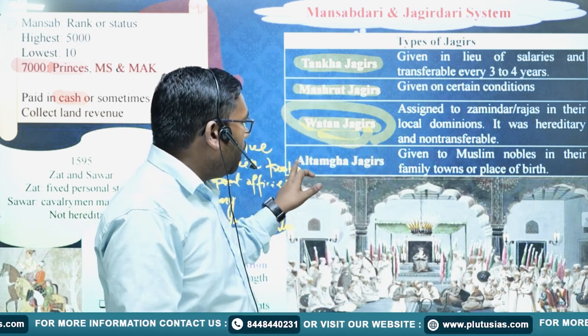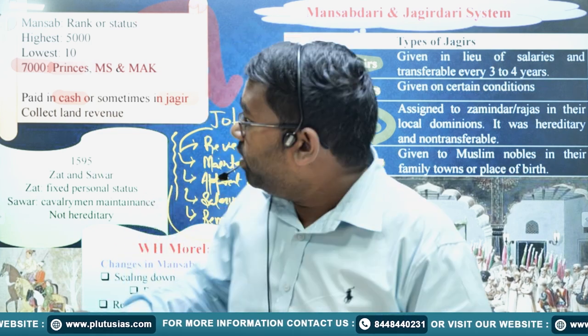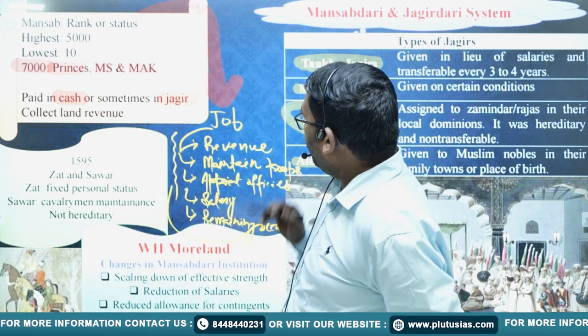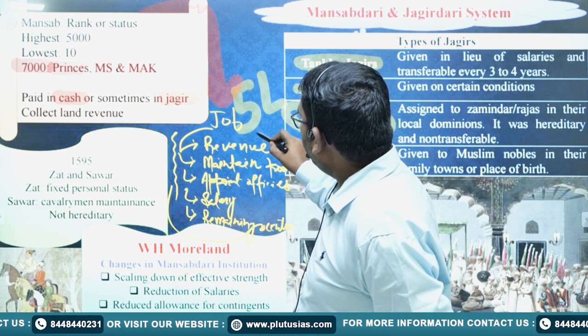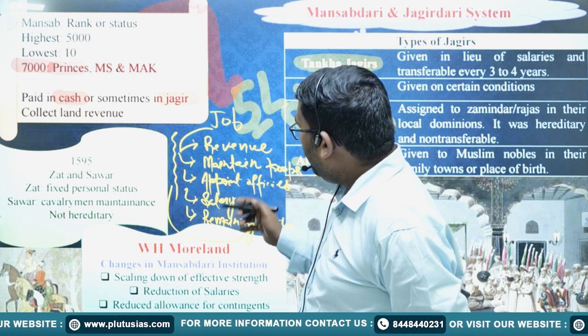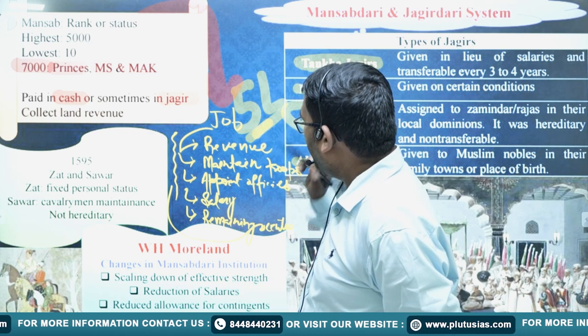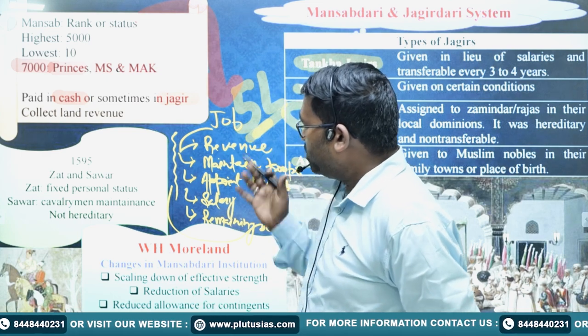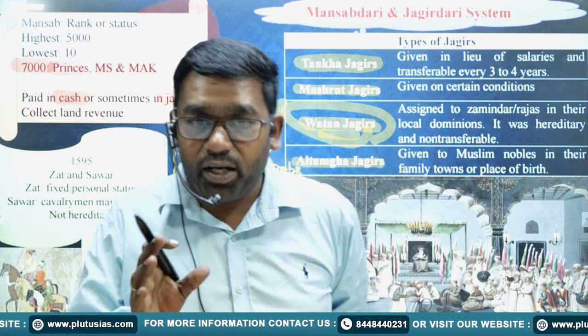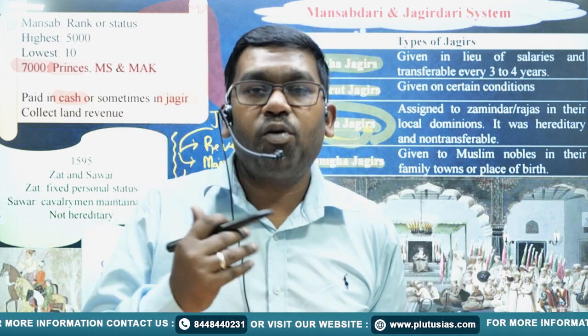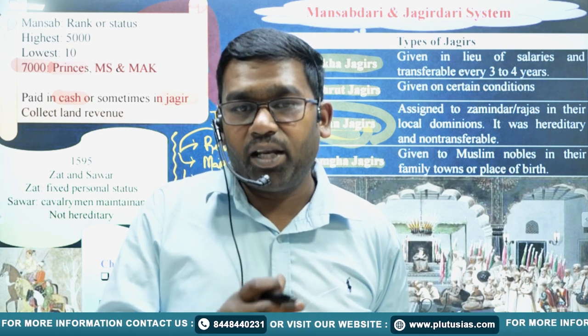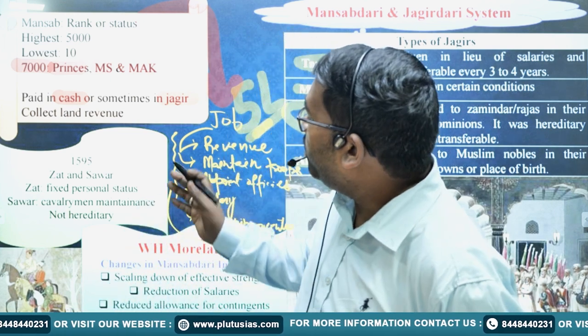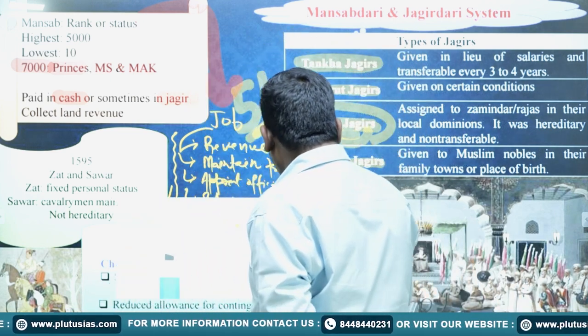The fourth type of Jagir was the Altamgha Jagir. Now, the Jagirdars were doing corruption. For example, suppose their total revenue was 5 lakh rupees. They would show their expenditure as 4 lakh rupees, but in actuality their expenditure was only 3 lakh. They were also supposed to maintain elephants, horses, and troops, but they were not maintaining the required number. For instance, if you have a 3,000 Mansab, you must maintain 3,000 troops, including elephant corps, cavalry, and foot soldiers — but these people were committing corruption. That is why, in 1595, Akbar brought some changes.